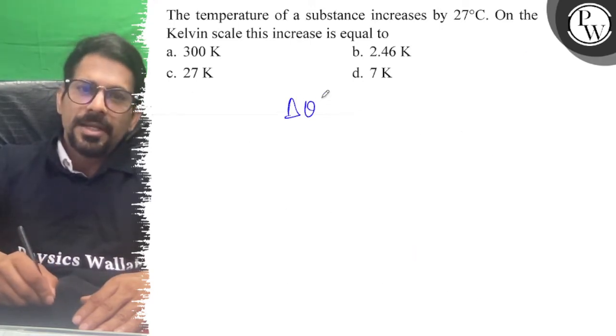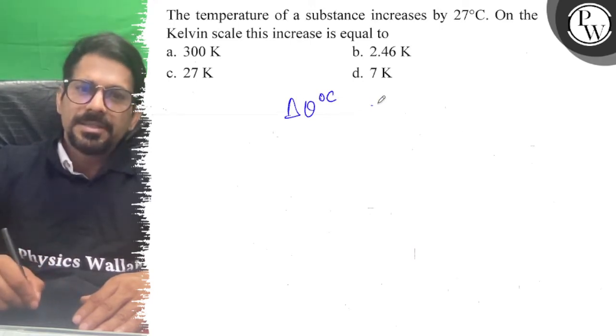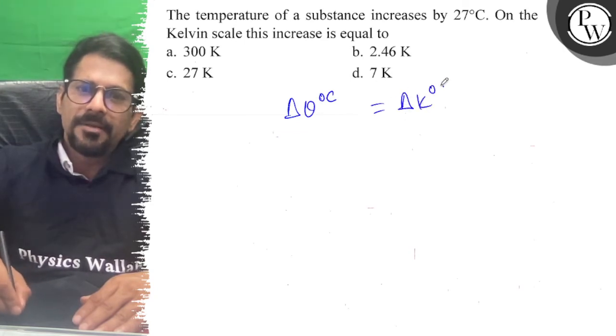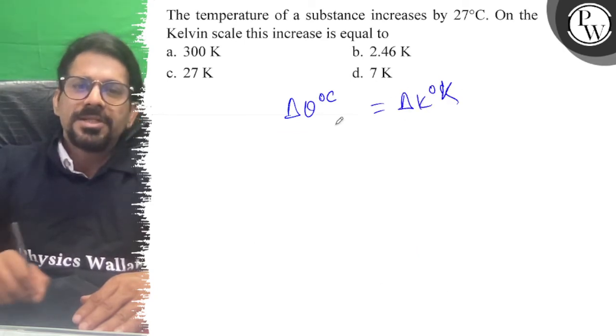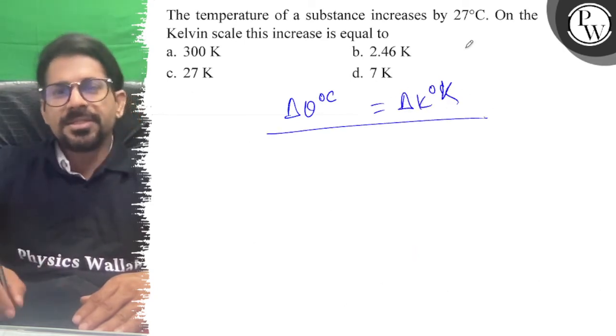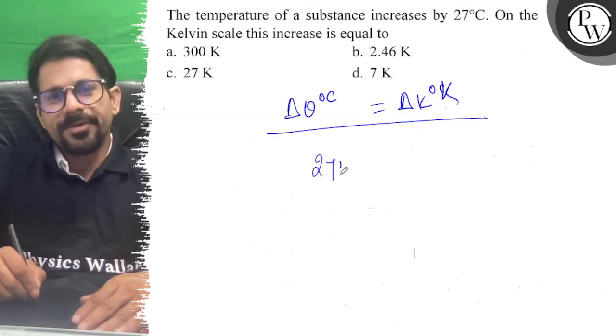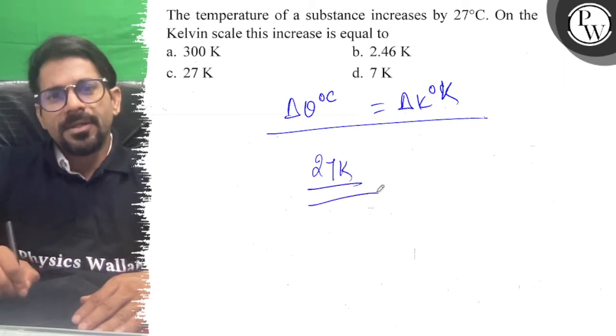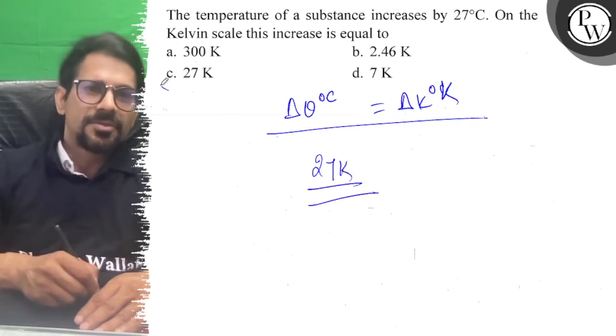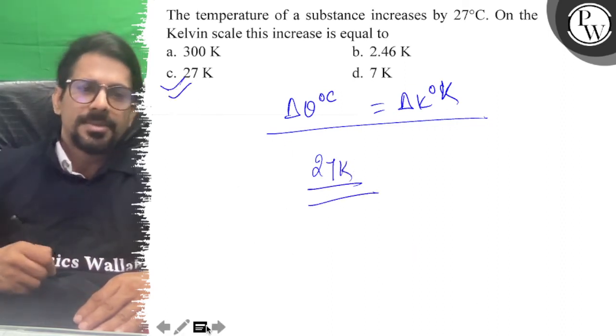Delta theta in degrees Celsius is equal to delta K in degrees Kelvin — this change is equivalent. Changes are always together, that is, 27 Kelvin. So the right answer to the question is C. All the best.